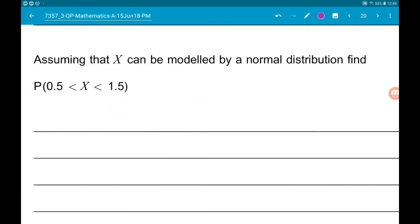Part B1 says assuming that X can be modeled by a normal distribution, find the probability X is greater than 0.5 but less than 1.5. So our distribution is X as a normal distribution with a mean 1.38 and a variance of 0.527 squared.